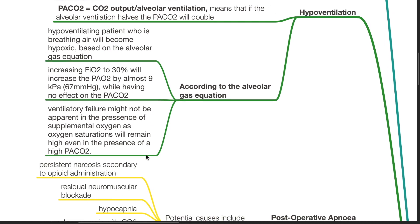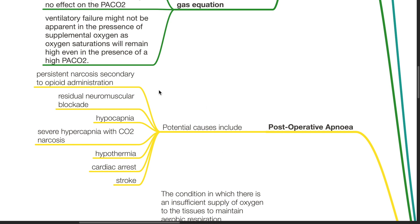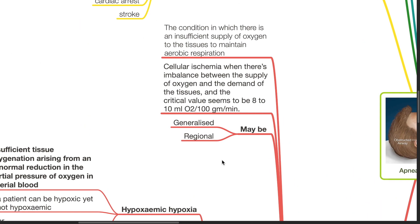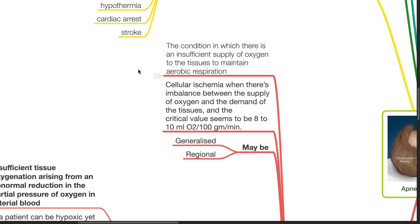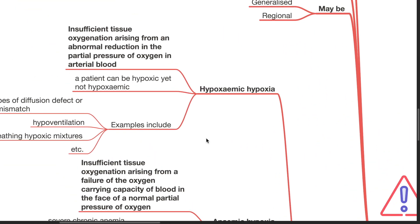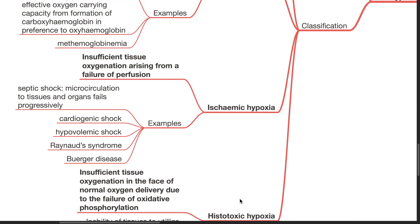Post-operative apnea: potential causes include persistent narcosis secondary to opioid administration, residual neuromuscular blockade, hypocapnia, severe hypercapnia with CO2 narcosis, hypothermia, cardiac arrest, stroke, etc. Hypoxia is the condition in which there is an insufficient supply of oxygen to the tissues to maintain aerobic respiration — cellular ischemia — when there is an imbalance between oxygen supply and tissue demand. The critical value seems to be 8–10 mL of oxygen per 100 g per minute. Hypoxia may be generalized or regional, and can be classified into hypoxemic hypoxia, anemic hypoxia, ischemic hypoxia, and histotoxic hypoxia.